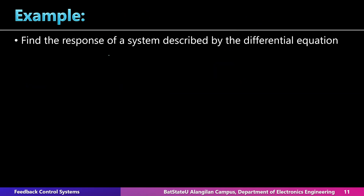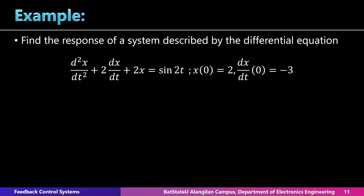Find the response of a system described by the differential equation: d²x/dt² + 2·dx/dt + 2x = sin(2t), with initial conditions x(0) = 2 and x'(0) = −3. This is a second order equation representing a second order system. The input is sinusoidal — sin(2t) — so we can expect the output is also sinusoidal with some transient response.